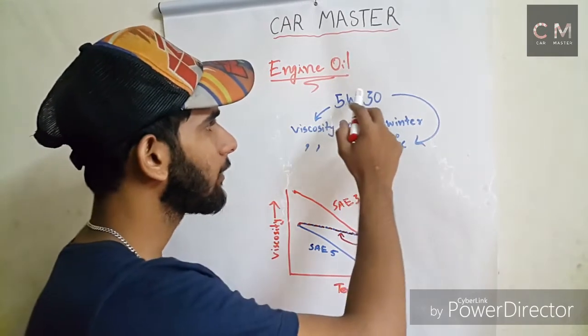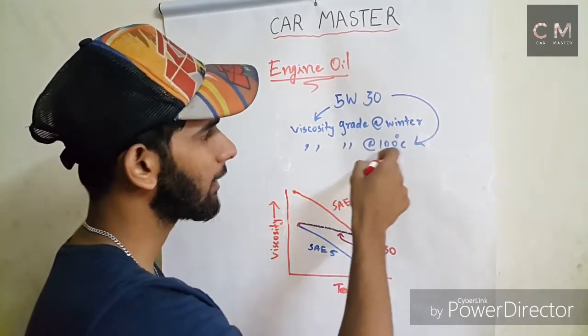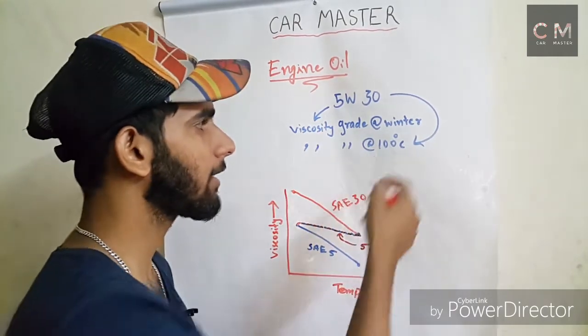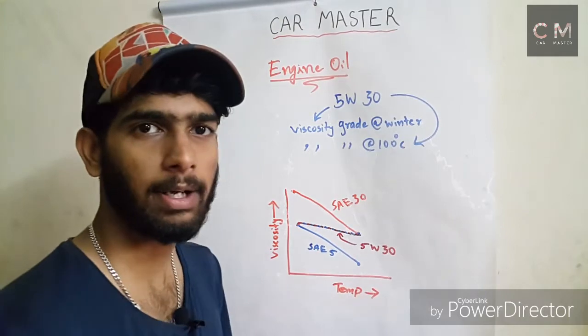Then, 30 is the viscosity grade at 100 degree Celsius. What is the engine working condition?